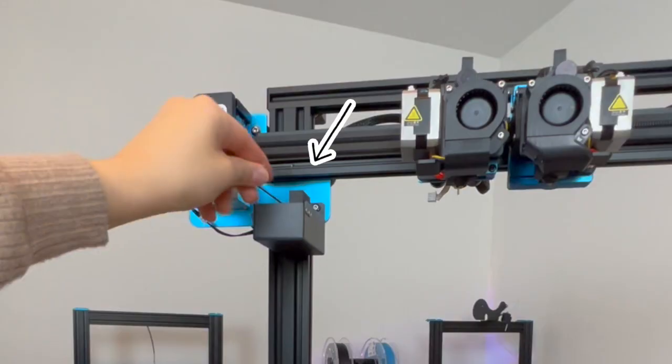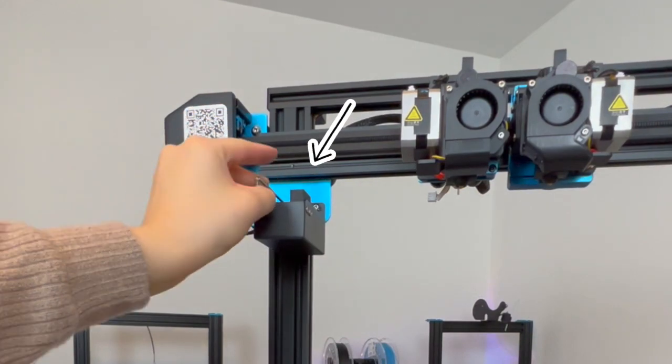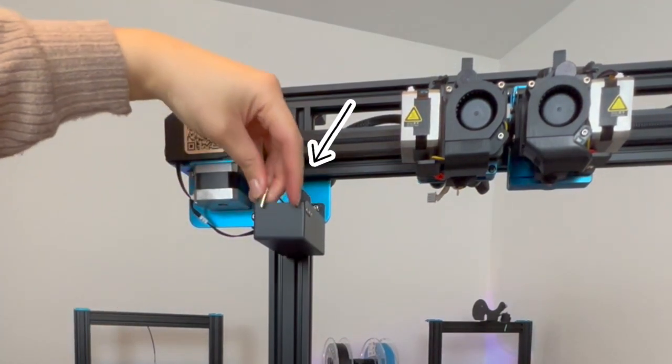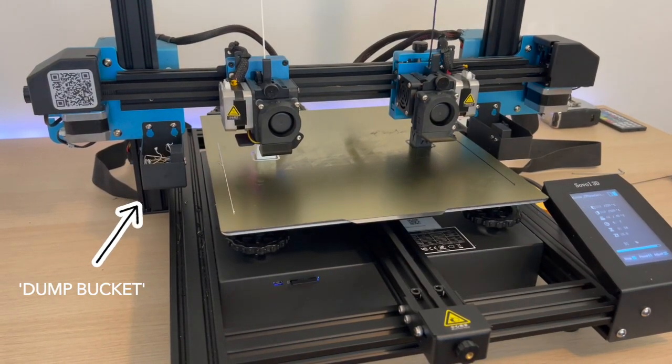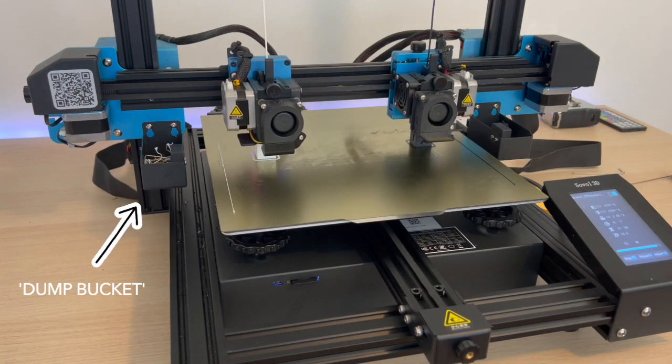A unique thing that the printer has are these silicone nozzle swipers and a little dump bucket, so that when the nozzle is heating up, the filament can stay behind on the little dump bucket, and then the nozzle gets cleaned by the little silicone before coming back to the print. I think that's pretty cool.